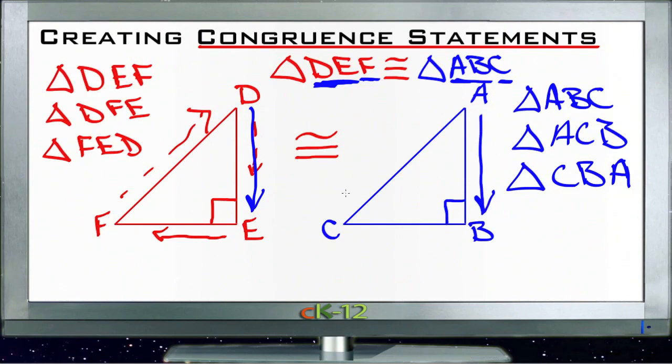So as we're looking through the example problems, we want to keep in mind that this way of writing out a congruence statement is very important. There's actually a lot more information in this statement than it appears originally. It doesn't just tell us that the two triangles are congruent—it tells us what parts of the triangles are congruent, specifically which angle is congruent to which other angle. So we're going to use that a lot in our example questions.